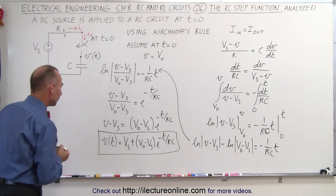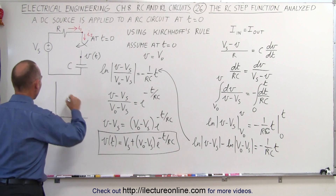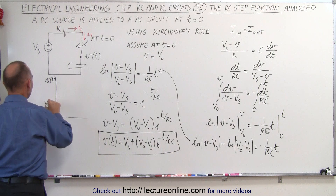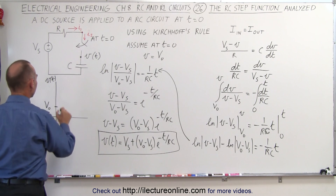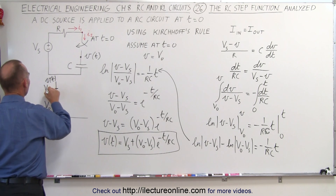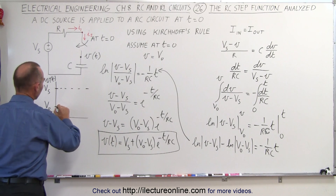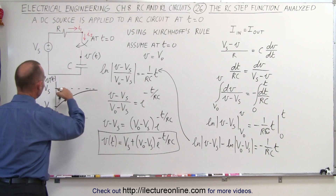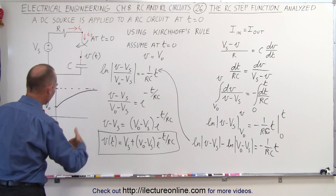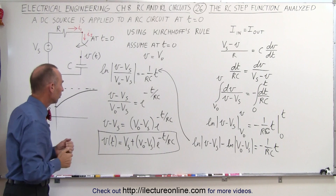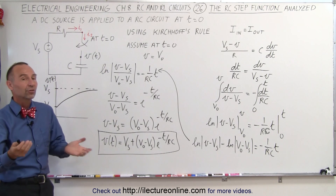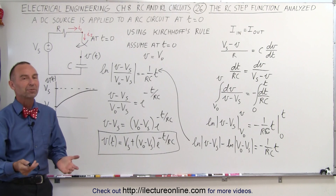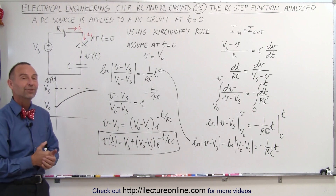If we were to graph that function it will look like this — here we have voltage as a function of time, with the initial voltage V_0 across the capacitor, and V_S as the voltage across the source. Over time, the voltage across the capacitor will, after five time constants or more, reach the voltage of the source, and then current will essentially stop flowing through the circuit. That's the equation that describes that particular function right here — that's how it's done.